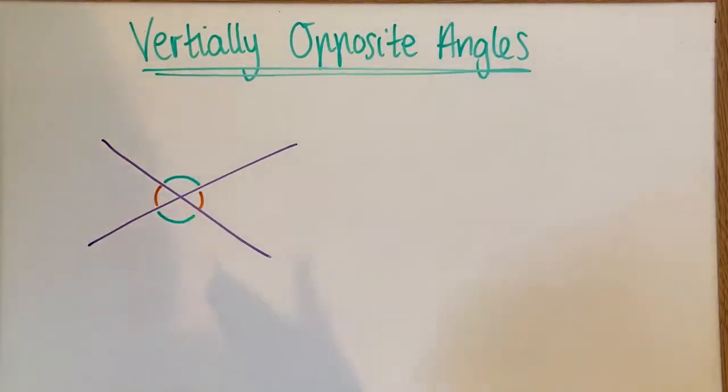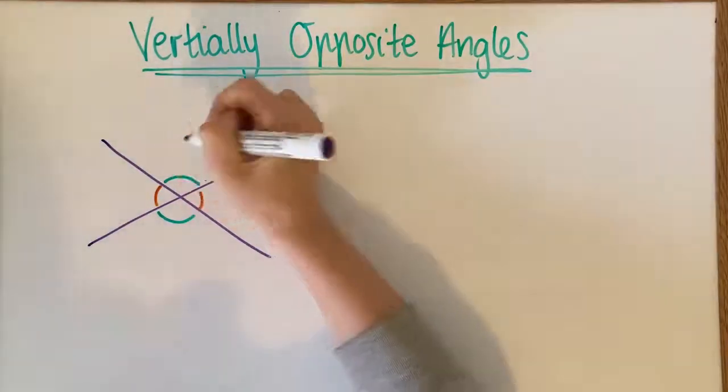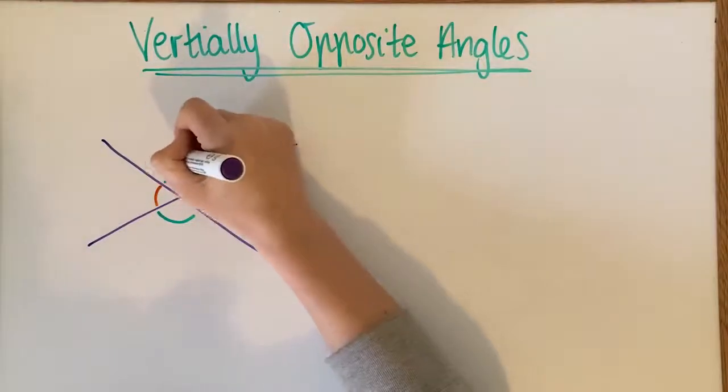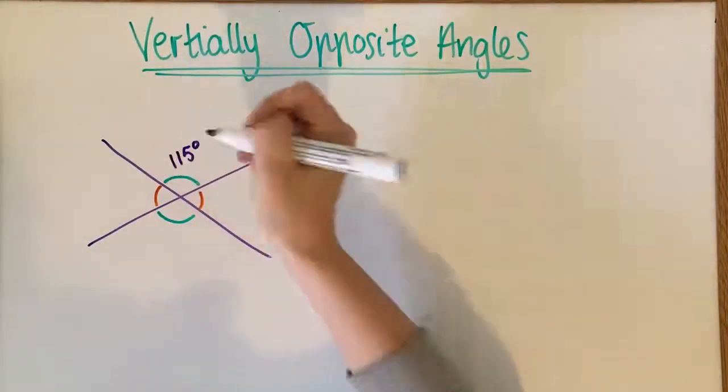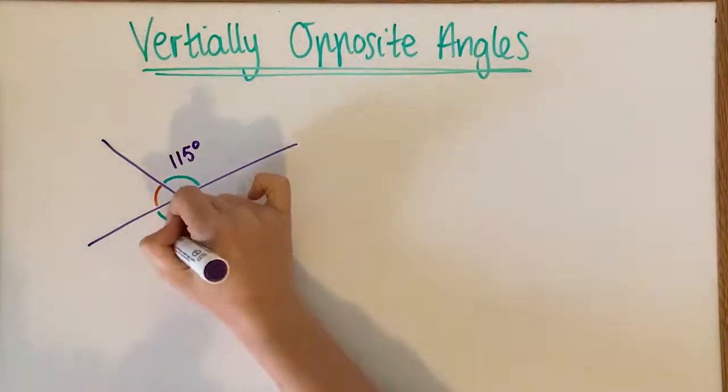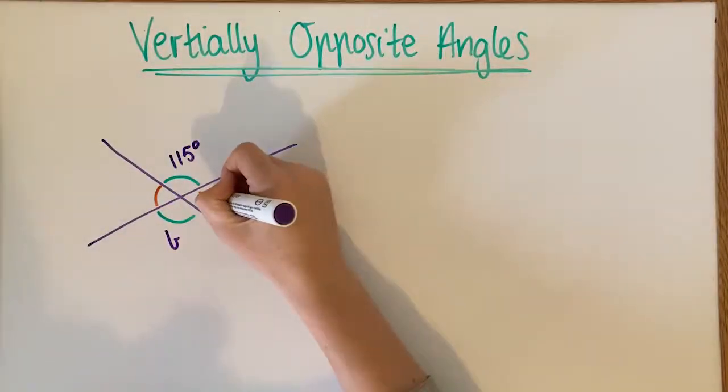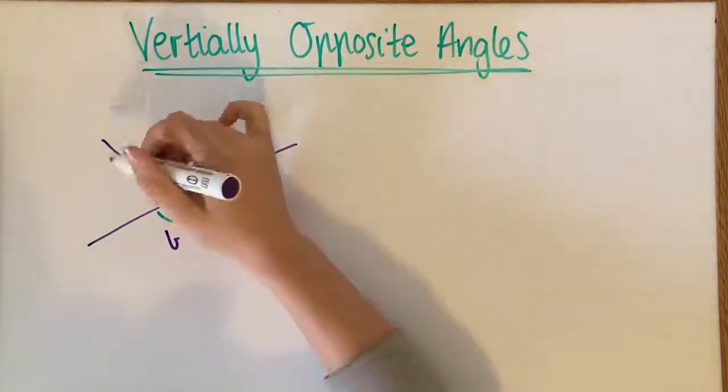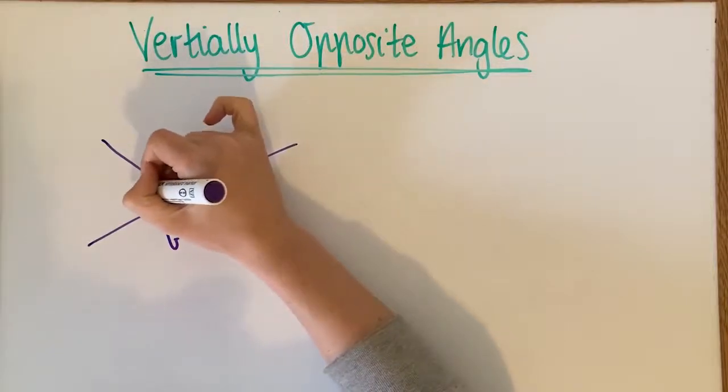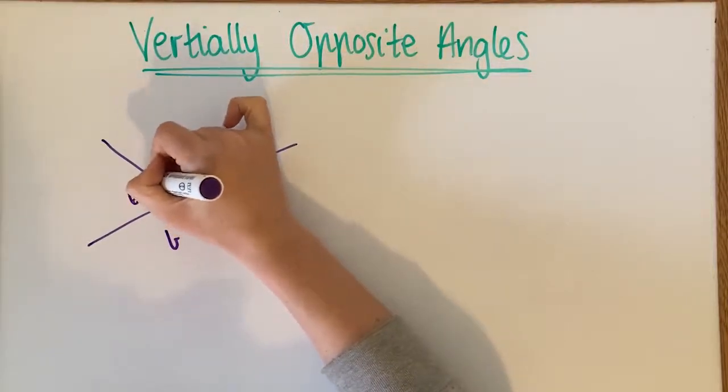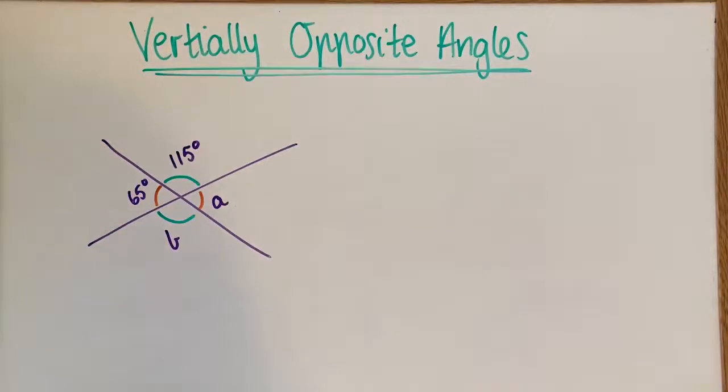As long as you do the lines straight, they'll be the same. So we can use this to solve problems. So if I knew that this angle here was 115 degrees and this was called B, and this angle here was called A, and this angle here was 65 degrees, I can work out what the other angles would be.